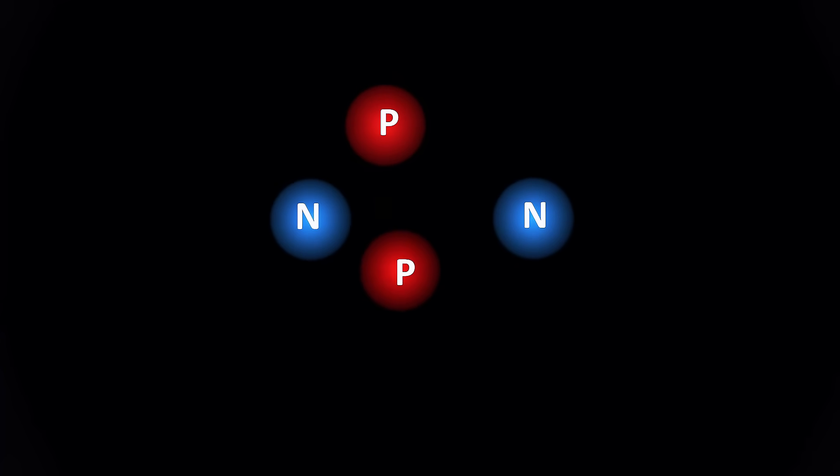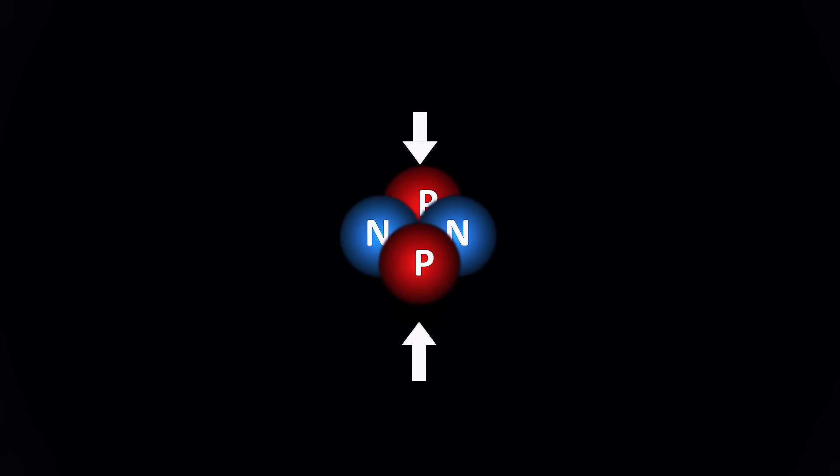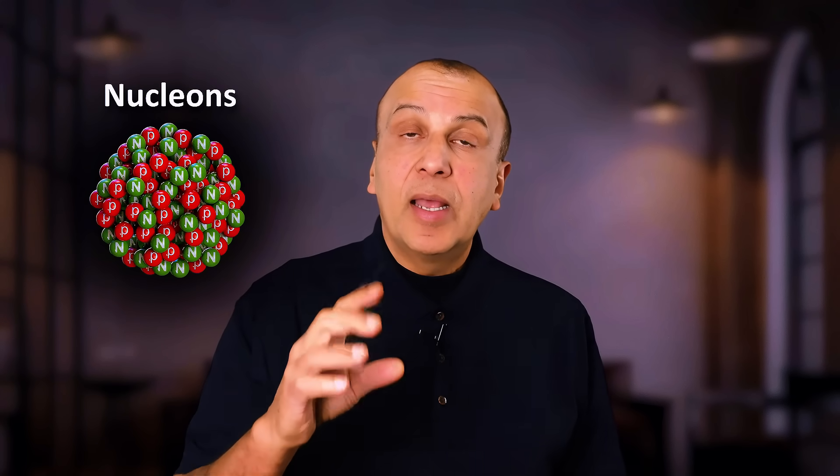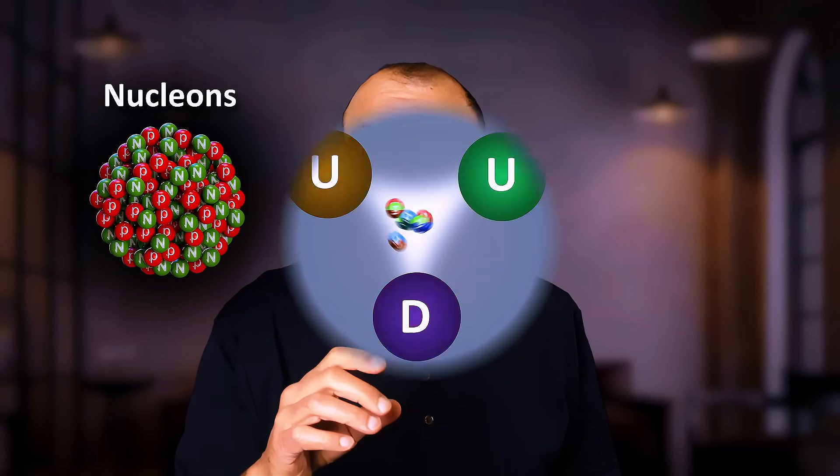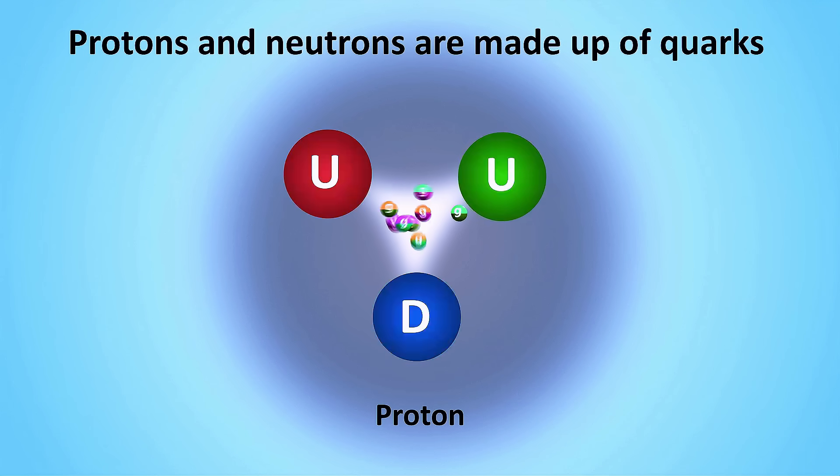The answer lies in one of the universe's most powerful forces, the strong force or strong interaction. At distances smaller than a femtometer, the strong force takes over, overwhelming the electromagnetic repulsion between protons. It's 137 times stronger than the electromagnetic force inside a nucleus. This force holds protons and neutrons, collectively called nucleons, together. But the real secret lies even deeper.